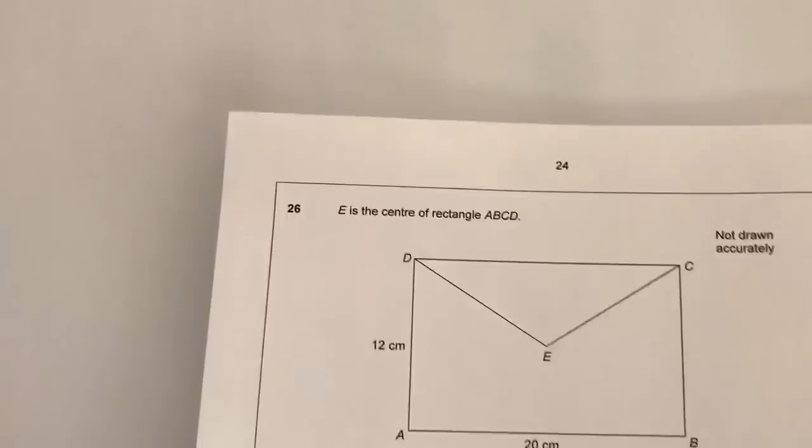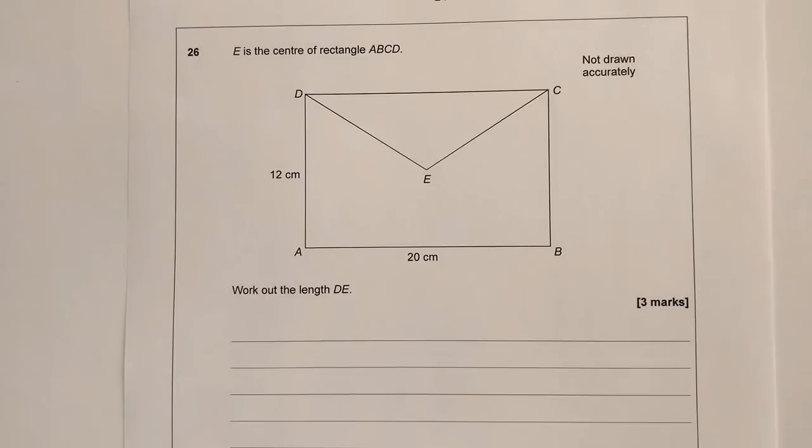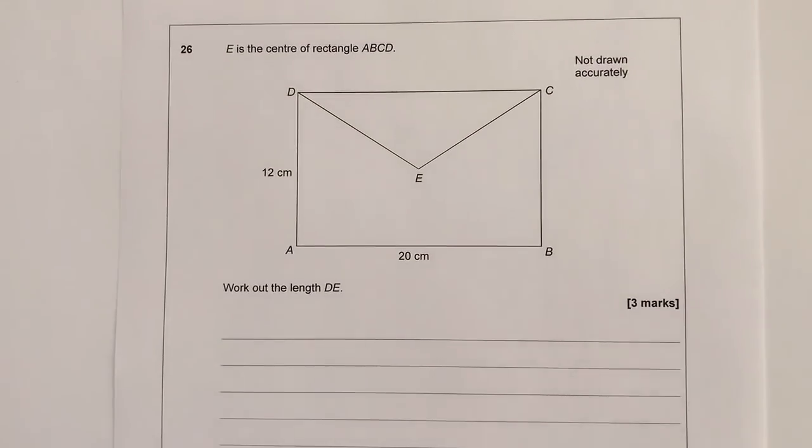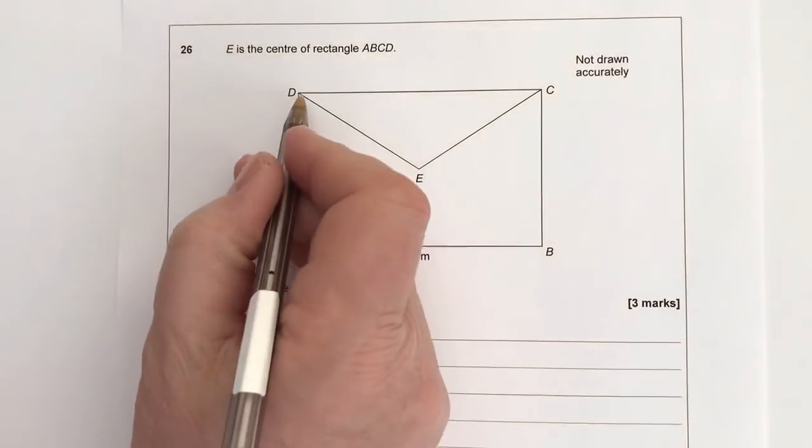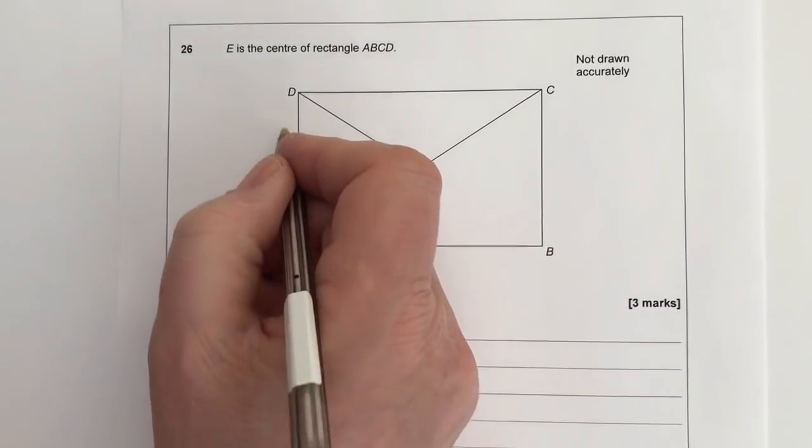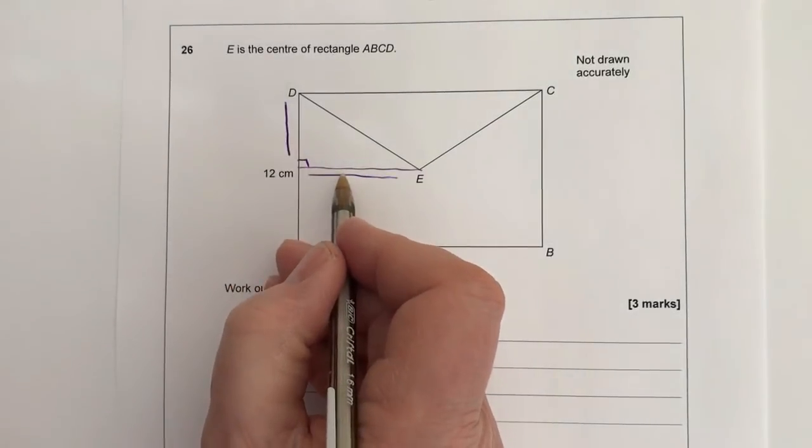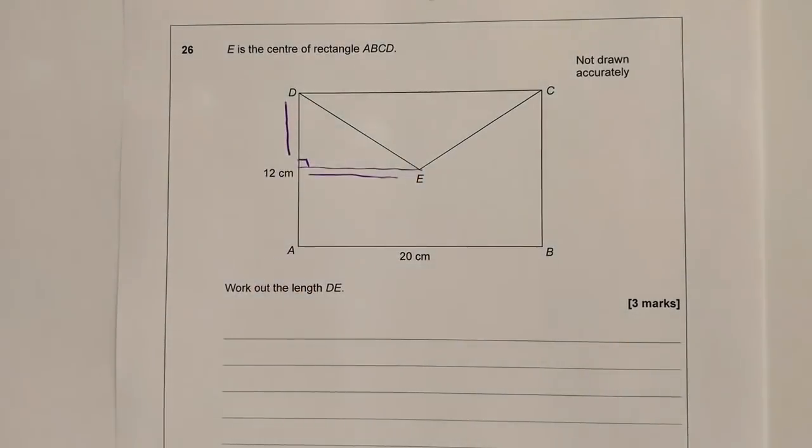Question number 26, we're being asked to work out the length DE. So this is where you've got just a little bit of work to do. Now, it's kind of one of those questions where unless it occurs to you right at the very beginning—this is actually, if you're going to work out this length here—it's actually a Pythagoras question. So what we've got is a right angle triangle where if we've got these two measurements, we can work out this one.